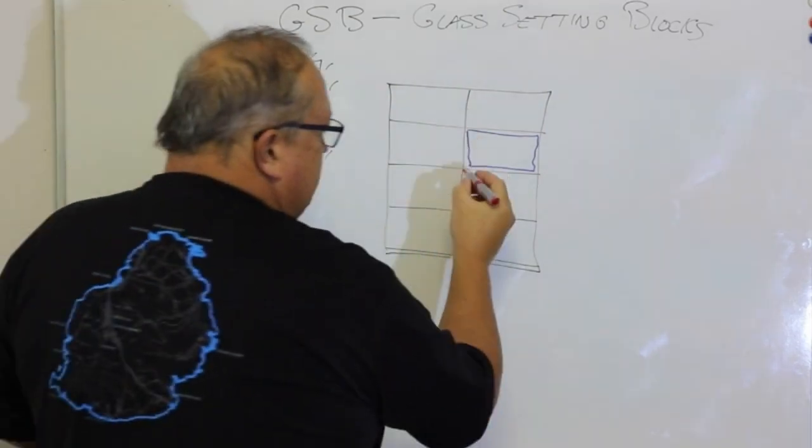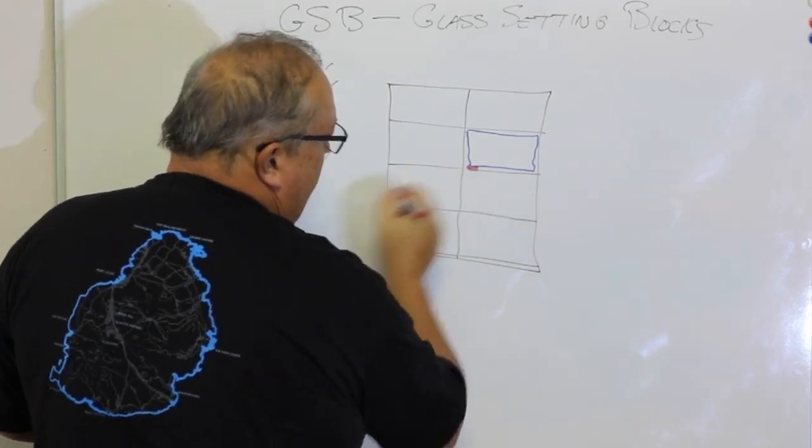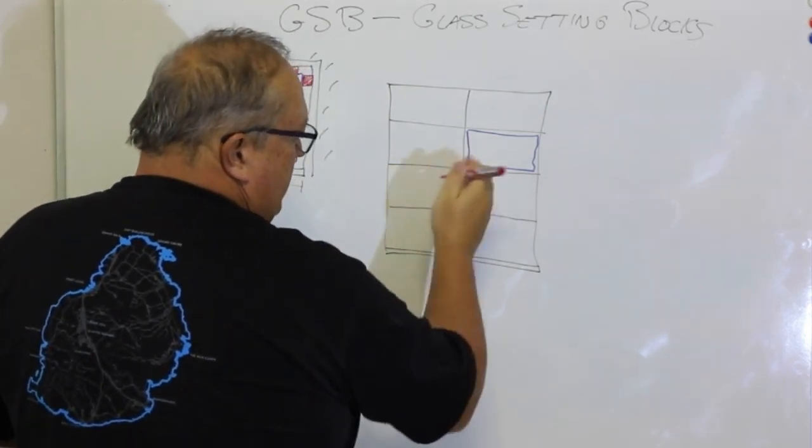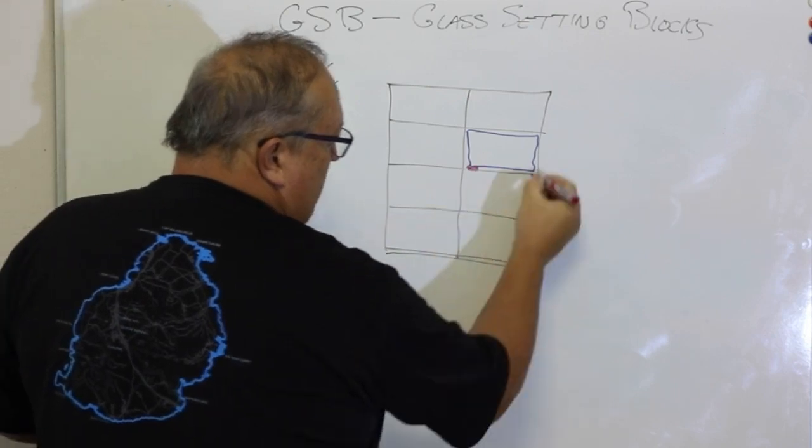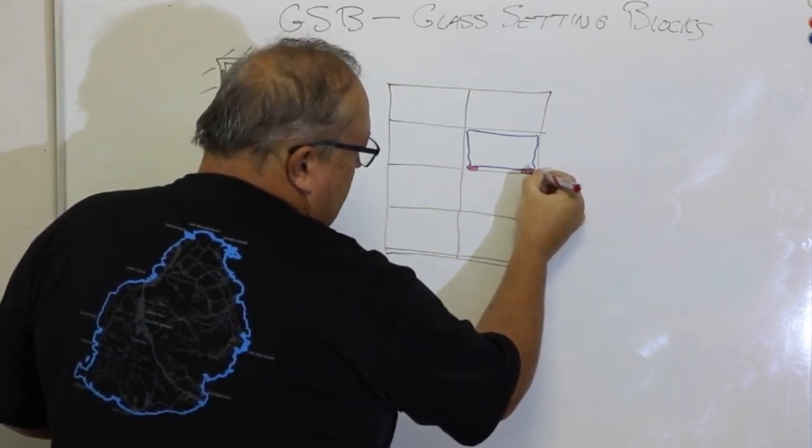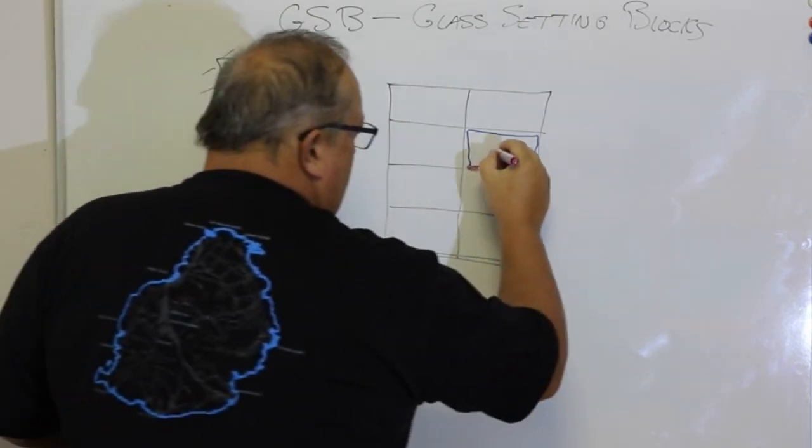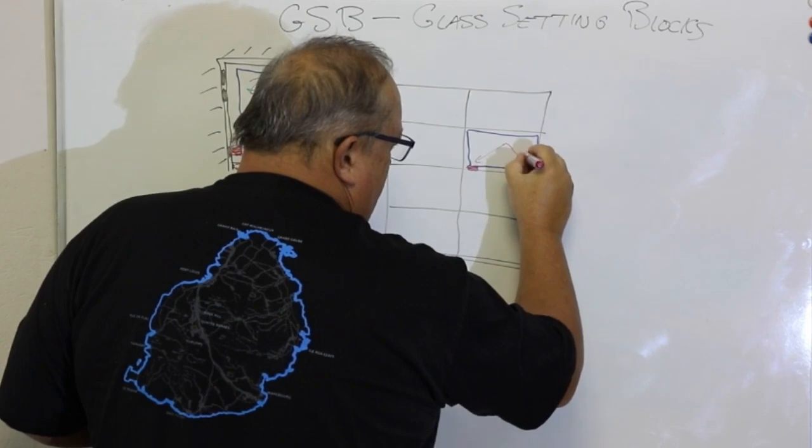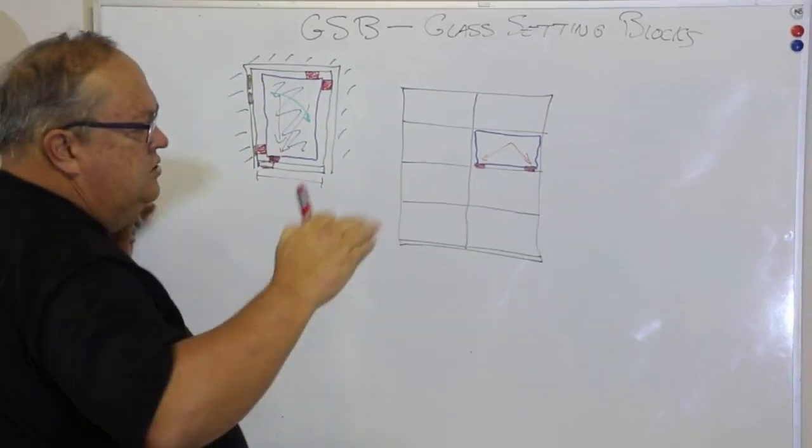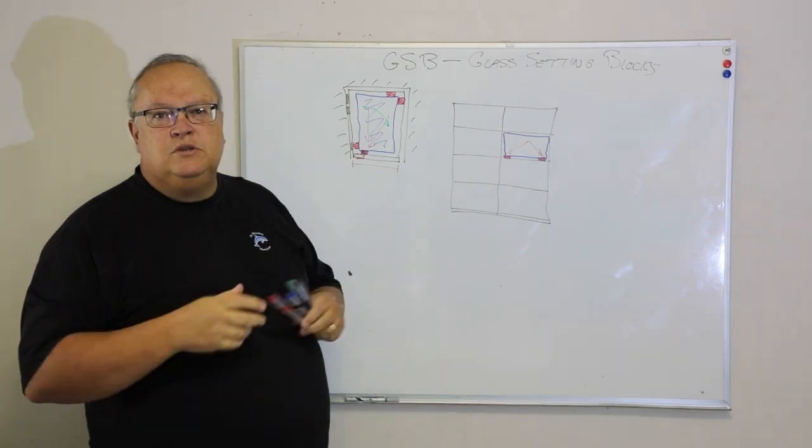So what I want to do in a fixed pane of glass is I want to put a glass sitting block on that edge as close to the intersection with the mullion as possible, and I want to put a second glass sitting block on that edge as close to my outer frame as possible. That will distribute the weight of that piece of glass to the outer edges of that transom, and that's where the transom is the strongest.